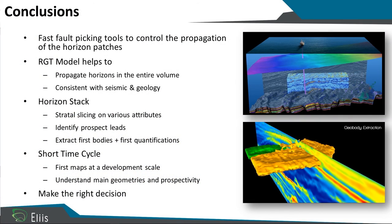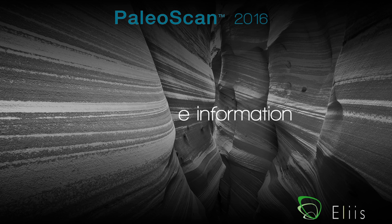In conclusion, inserting faults in the grid is an easy way to have more control — we simply connect patches instead of removing and discussing them. This leads to a more accurate relative geo-time model that is more consistent with the seismic. Because the RGT model is more consistent, the horizon stack will also be more consistent, giving more precise control to spot all targets. Because we can deal with large data in a short amount of time, we can easily reduce the time cycle, and everything is made to support making the right decisions. Thank you for watching. For more information, feel free to visit our website or contact support.